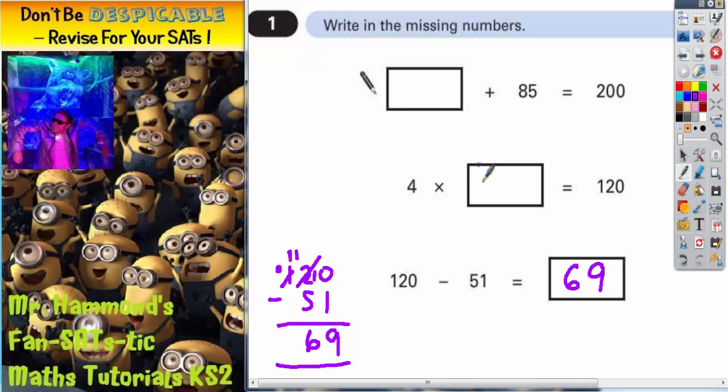Now, on the first two questions, it's not quite that straightforward because it's part of the question that we don't know. So mystery part of the question, add 85 equals 200. If we're adding 85 to get the answer of 200, if we work in reverse and go backwards, we will get the answer.